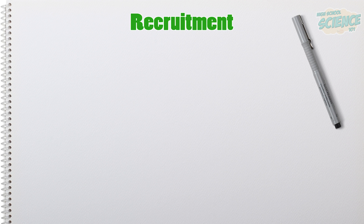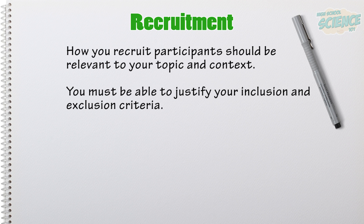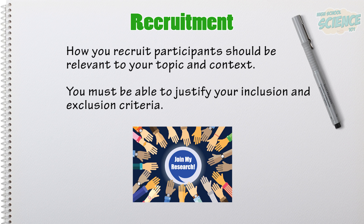How you'll recruit the people to be involved in your study is an important decision, and you might even use more than one strategy in your project. Your method of recruitment should be relevant to your topic and context, and you must be able to justify why you've chosen to include or exclude certain people or groups from your study. You also need to consider whether your recruitment strategy interferes with your consent process — in other words, does your method of recruiting people interfere with their ability to voluntarily participate? If I recruit all the students within the classes I personally teach, that could interfere with their ability to see the study as voluntary and they might feel compelled to participate.